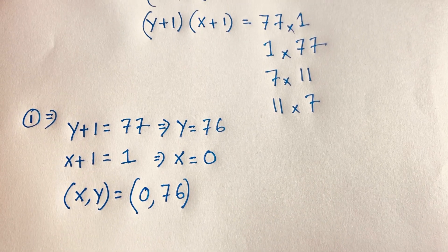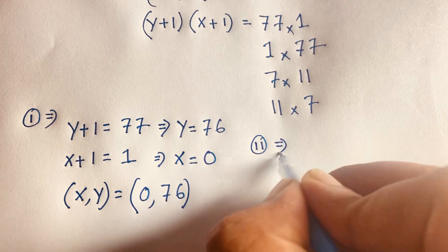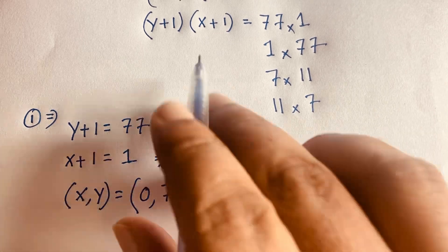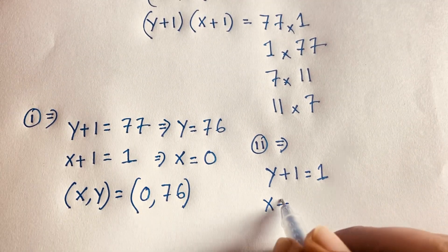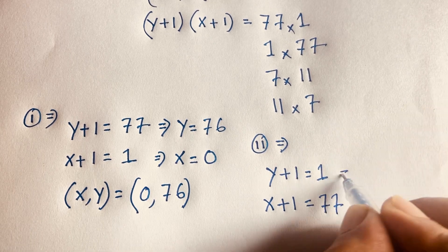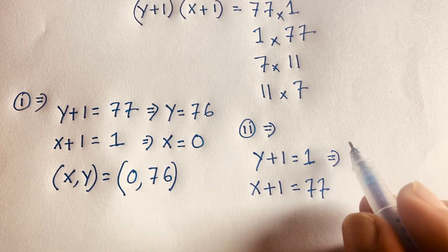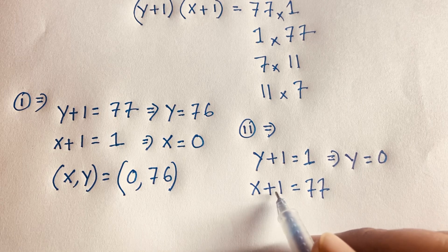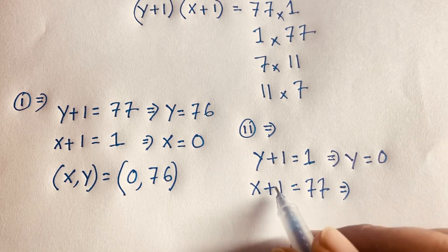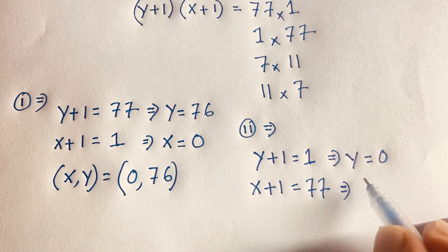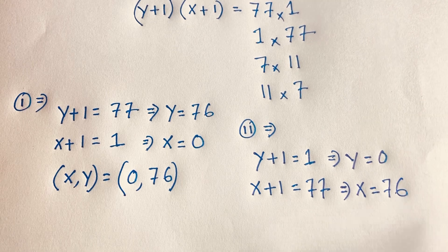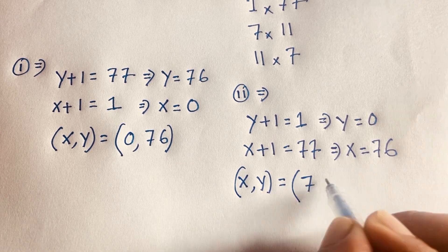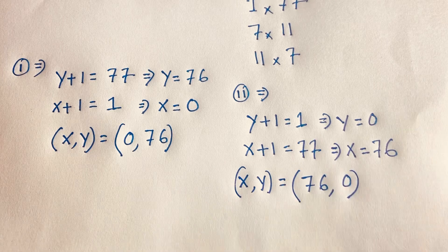In Case 2: y plus 1 equals 1 and x plus 1 equals 77. So y equals 0, and x equals 77 minus 1 equals 76. So the answer for this case is x = 76, y = 0.